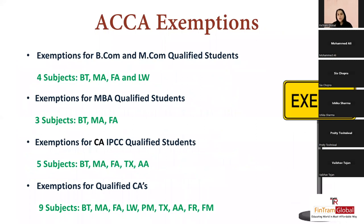For exemptions, you can use the ACCA exemption calculator on the official ACCA website — search 'ACCA exemption calculator' on Google. For popular commerce background courses: BCom or MCom qualified students get four subjects exempted — BT, MA, FA (knowledge level) plus Law from skill level. MBA qualified students get three exemptions — the knowledge level subjects BT, MA, and FA.